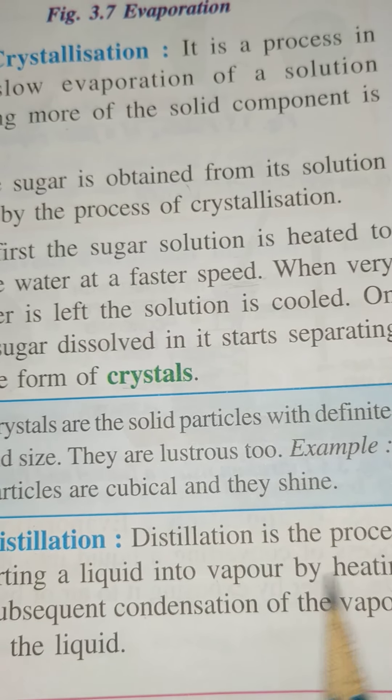This method is used when both the solid and liquid can be recovered. The solution is heated, the liquid evaporates as vapor, and then it passes through the condenser where we get it back as a pure liquid — known as the distillate. The solid is left behind in the distillation flask.